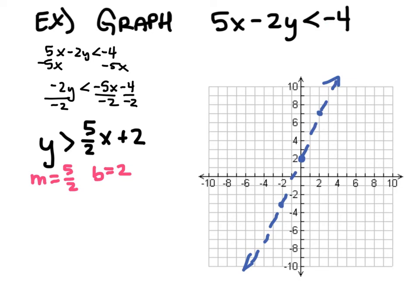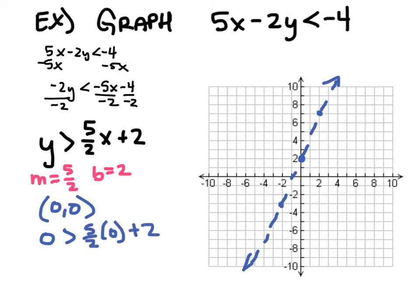Now I test the point (0,0), which is just outside this line. Plugging in: is 0 greater than 5/2 times 0 plus 2? That's: is 0 greater than 2? No. So (0,0) is not in my solution, and I shade the other side of the line.